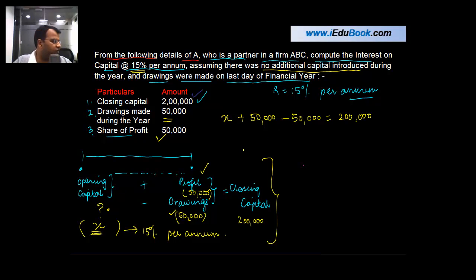Because there is no additional capital introduced during the year so the entire share capital is x. 50,000 minus 50,000 gives you 0 which means that x is equal to 2 lakh. Interestingly the opening capital is equal to the closing capital, or in other words opening capital is equal to x is equal to 2 lakh.